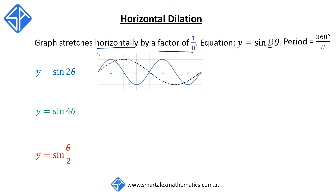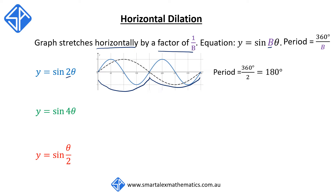Here are three examples. In the first graph, the black dotted line is the original function y equals sine theta, with a period of 360 degrees. By having the number 2, the period becomes 360 divided by 2, which is 180 degrees. So it takes 180 degrees to complete one cycle, and within 360 degrees we can have two complete revolutions.